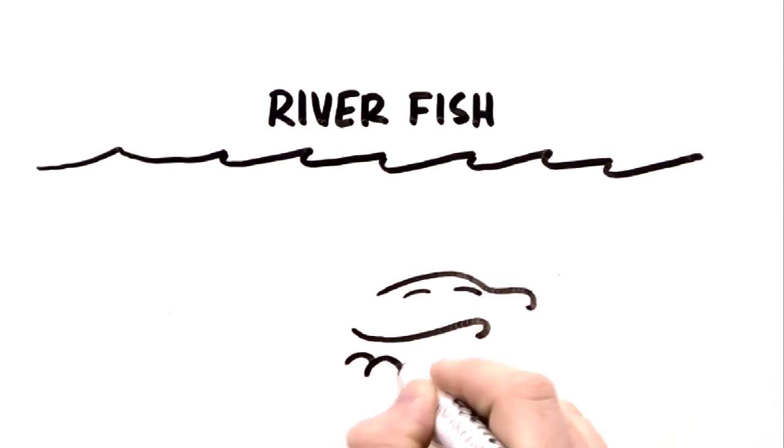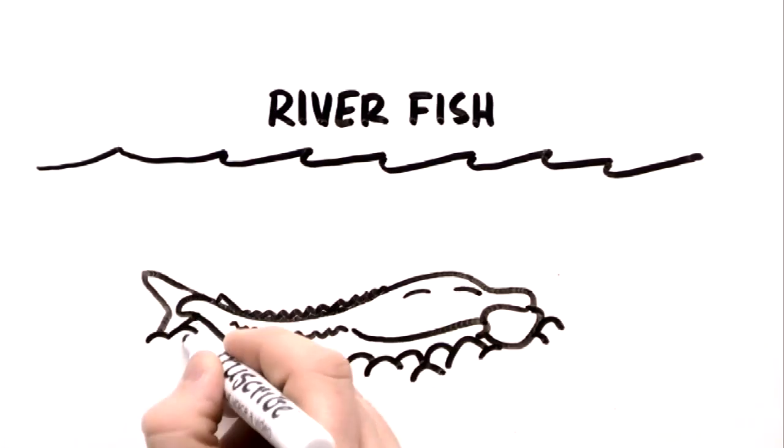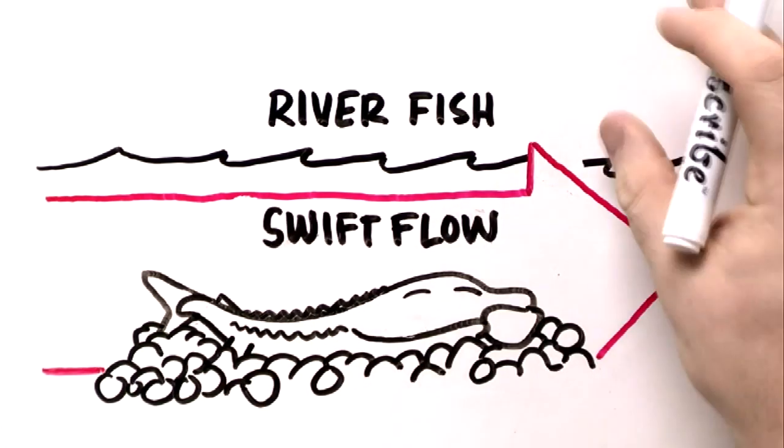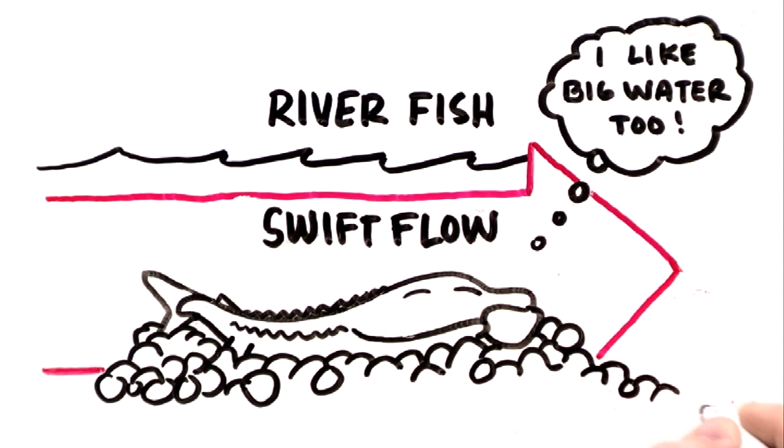The sturgeon is truly a river fish. It needs the rocky, gravelly bottom and swift flow of a river to spawn, but it likes to swim in big water too, if it can get to it.